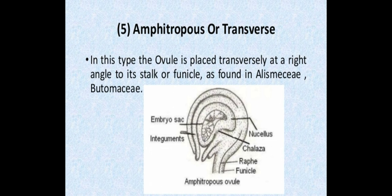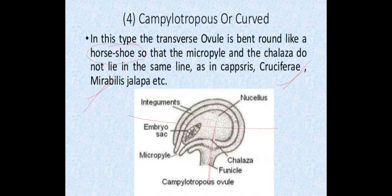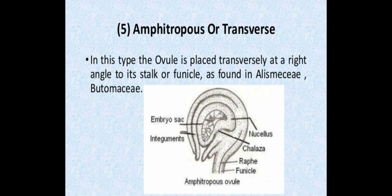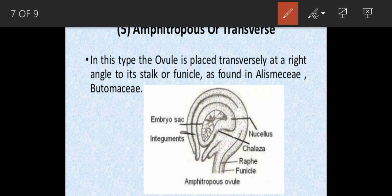The fifth type is amphitropous, or transverse ovule. In amphitropous ovule, the embryo sac forms a horseshoe shape — note that in the fourth type the ovule body is horseshoe-shaped, but here it is specifically the embryo sac that is horseshoe-shaped. The ovule is placed transversely at a right angle to its funicle, and the example is the Butomaceae family.